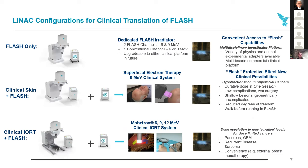We offer it in three different configurations for customers to buy. We sold five of them — we placed five of these this year. You can get it as a flash-only dedicated irradiator, with two flash channels at six and nine MEV at that high dose rate range, plus one conventional channel as a calibration standard. That system would be upgradable to either of the two clinical platforms. You can also choose a system where, if you're not going to keep the flash system busy all the time, you can share its use — get the clinical system, either the derm or the IORT system, and add a flash controller to it. It can be used clinically making money and paying for itself while also doing flash research. This has been a very popular way to approach the market, as our last year has indicated.